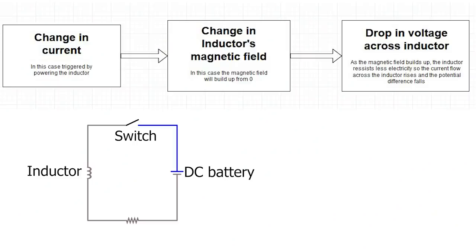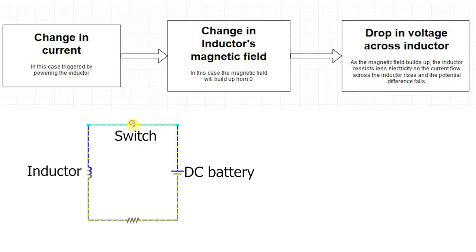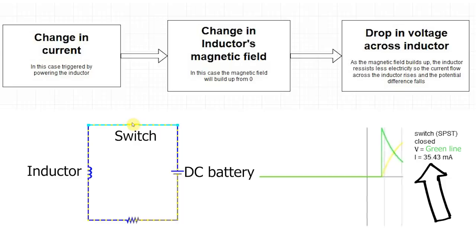Let's talk about how an inductor behaves under a DC voltage. Let's make a flowchart and a DC demo circuit to understand how this works. Right now, the current across the inductor is zero since the switch is open and there's no electricity flow in the circuit. As soon as we turn the circuit on by closing the switch, the current starts to flow in the circuit and the inductor.